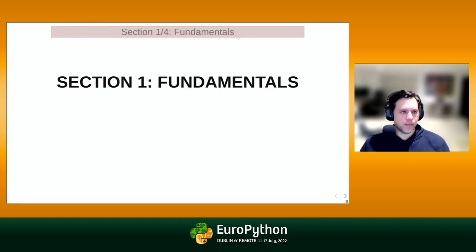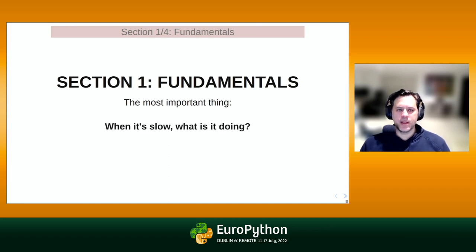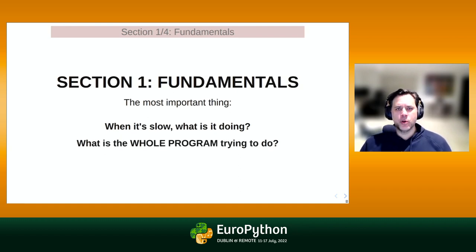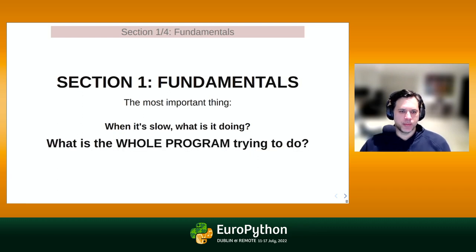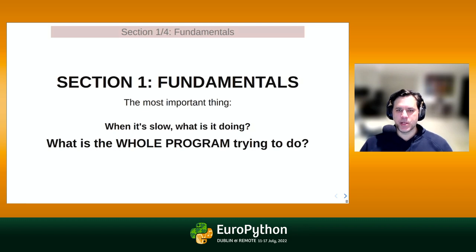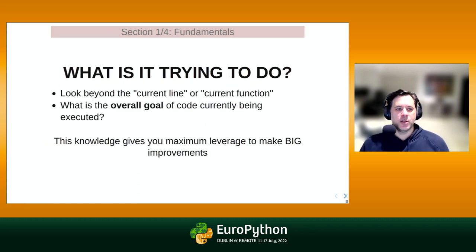Section one: fundamentals. There's really only one fundamental I want to drive home today. The most important thing you need to obtain when analyzing a performance issue is — when the system is being slow — what is it trying to do? Not in a fine-grained detailed way, but in an overall way. It is super easy when analyzing performance to focus on one particular function or line, but by doing so you miss out on enormous performance opportunities that come from changing the design of the program.